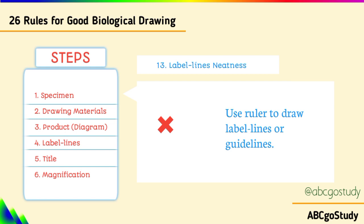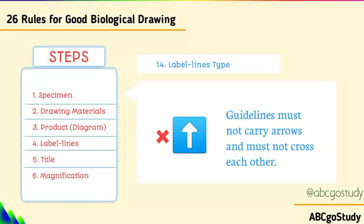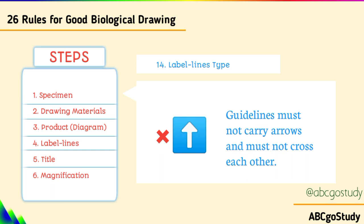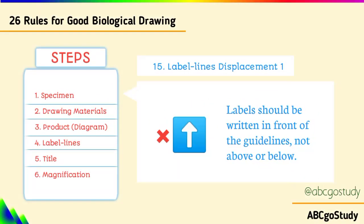Number fourteen, label line displacement: guidelines must not carry arrows and must not cross each other. Don't use arrows as guidelines, and don't draw guidelines that cross each other — if guidelines cross, it suggests one label is the answer to another, making it unclear and losing marks.